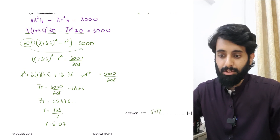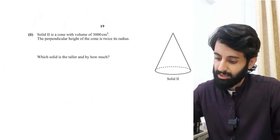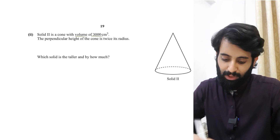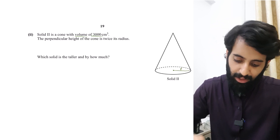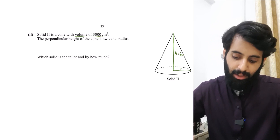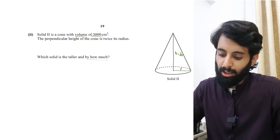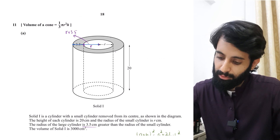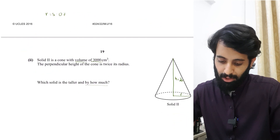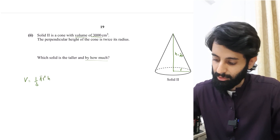So r = 5.07, which is the correct answer for part one. Part two: Solid two is a cone with volume 3000 centimeter cubed. The perpendicular height is twice its radius, so if the radius is r, then h = 2r. The formula for cone volume — already given in the question — is V = (1/3)πr²h.